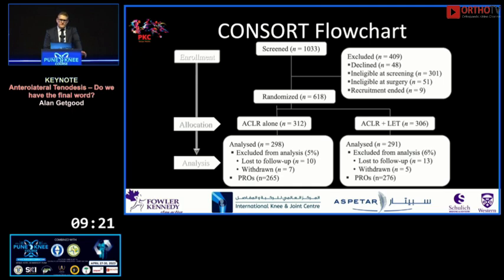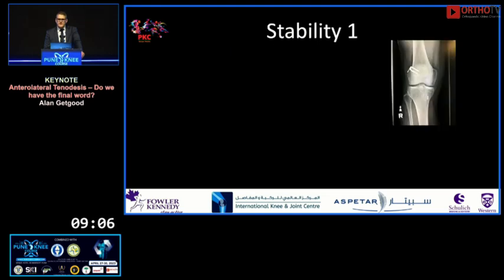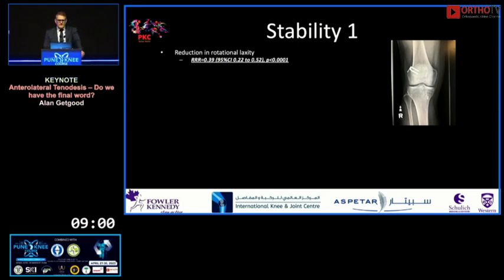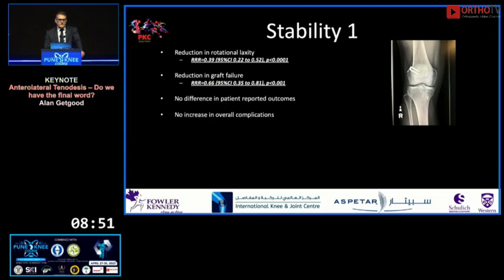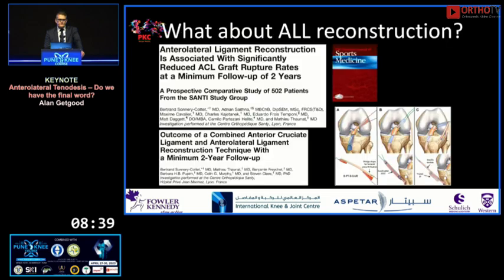We screened over 1,000 patients and randomized over 600 with relatively equal numbers in both groups, and less than 5% were lost to follow-up at the two-year endpoint. Mean age was 19 years with no demographic differences between groups. To summarize STABILITY 1 results: significant reduction in rotatory laxity, a 66% reduction in graft failure when LET was added to a hamstring tendon autograft, no difference in patient-reported outcomes, no difference in overall complications, no clinical difference in strength or functional testing at 12 and 24 months, and no real difference in return-to-sport rates.